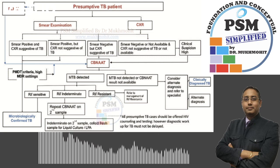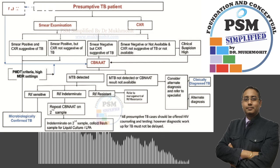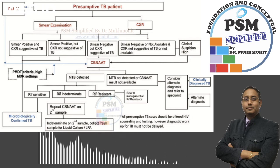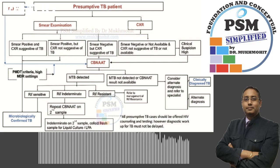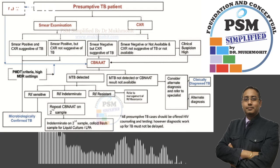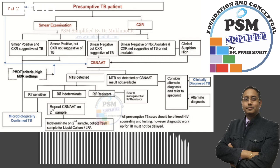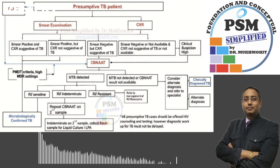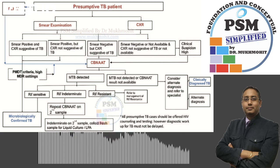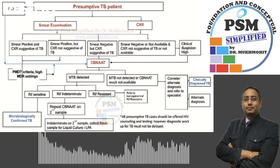In a clinical setting, the presumptive pulmonary TB patients or cases are usually identified with chest symptoms. Some of these patients may also come directly into our OPD with a chest X-ray. But the first thing the program tells us is to do a sputum smear microscopy. This smear microscopy can be a Ziehl-Neelsen staining or can be a fluorescent microscopy.